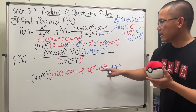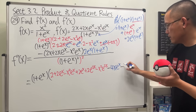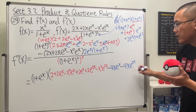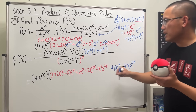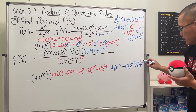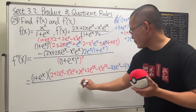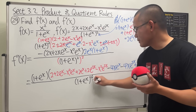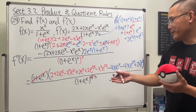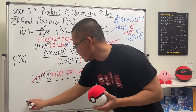Continuing: minus 4x·e^{2x} because we have 2eˣ giving e^{2x}, and lastly plus 2x²·e^{2x}. On the bottom we have (1 + eˣ)⁴. The (1 + eˣ) we factored out earlier cancels one factor, leaving (1 + eˣ)³. Now let's combine terms on the top.